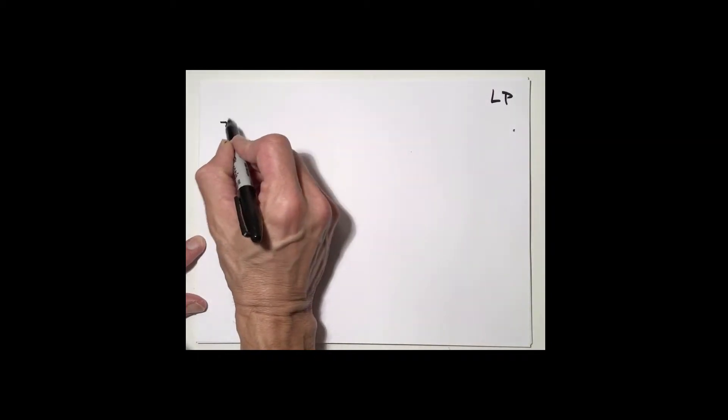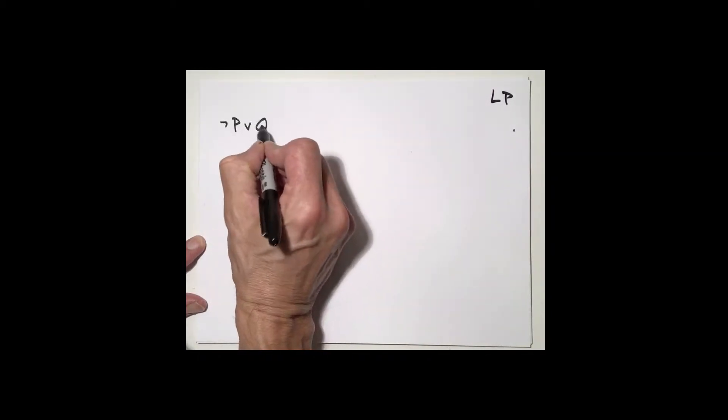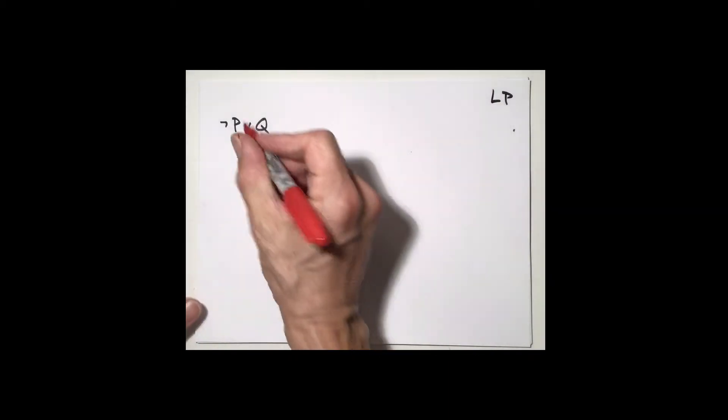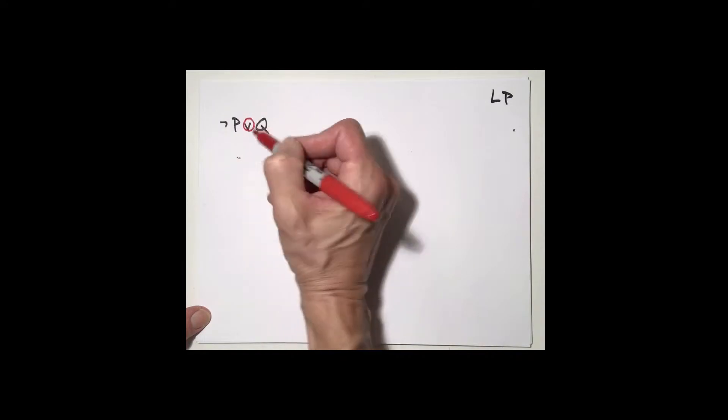So for instance, I might think of a simple example like this. Suppose I have the sentence not P or Q and you all know how to identify the main logical connective. Just looking at it, you would know that this is a disjunction.